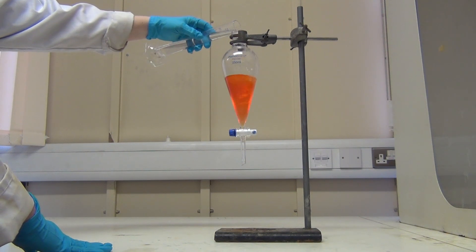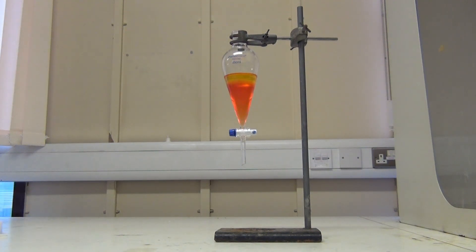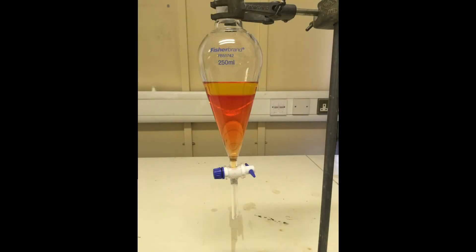One layer is the aqueous phase, and the other layer is the organic phase. Here we added colour to the aqueous and organic layers to show the separation more clearly, but it is more common for both layers to be colourless.